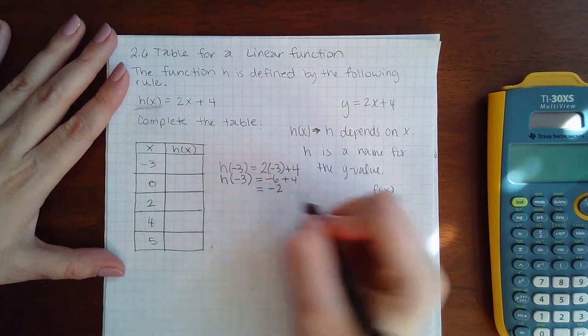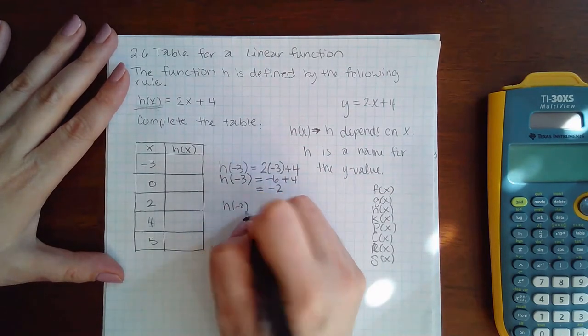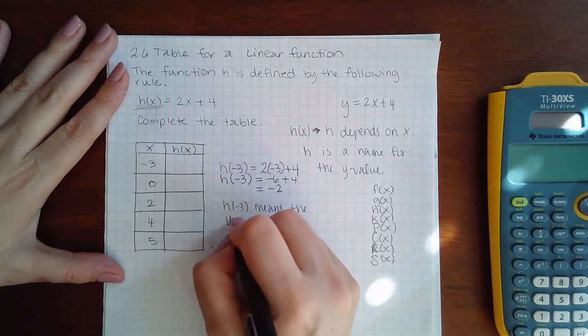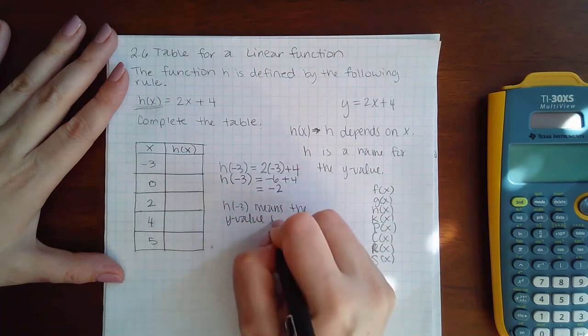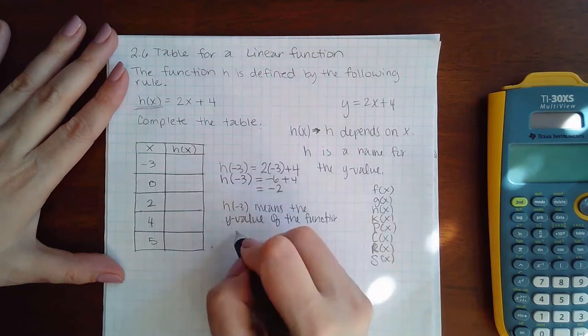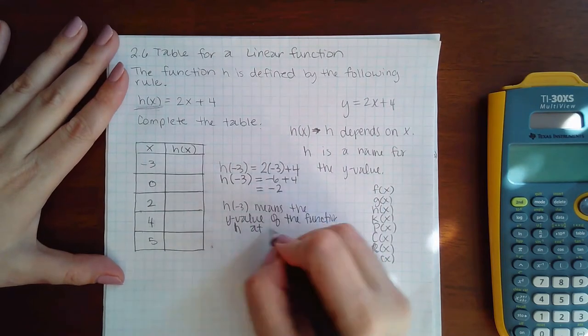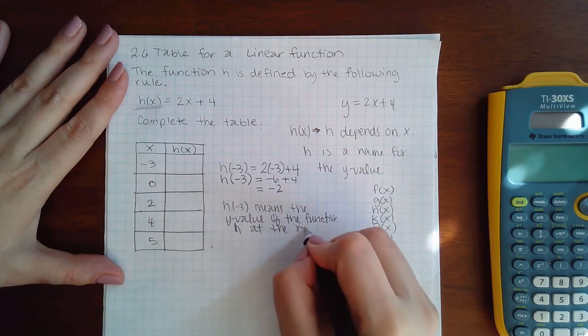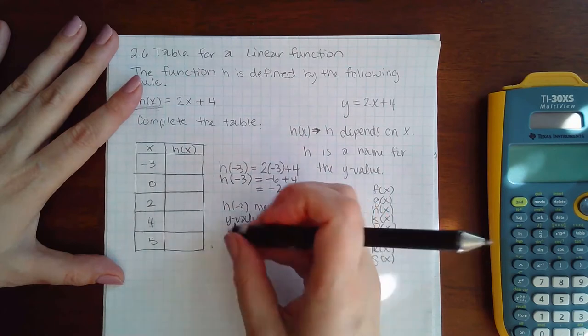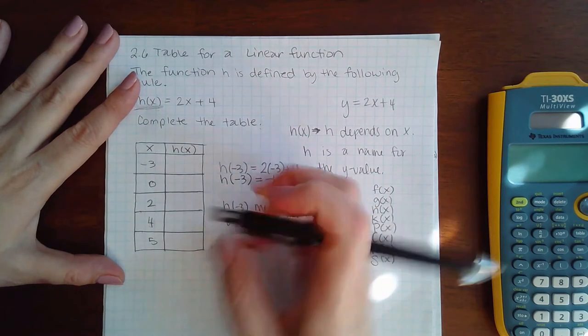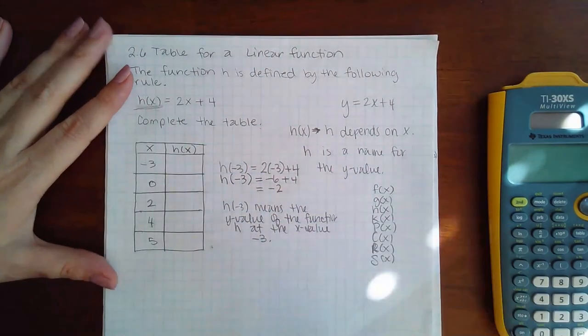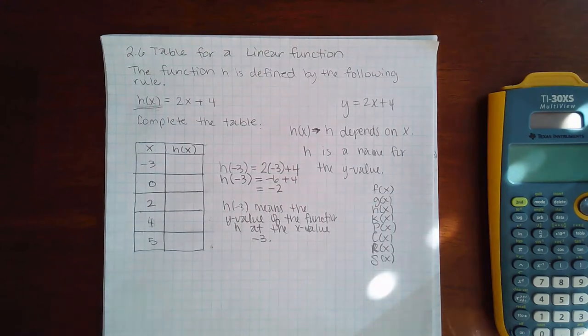So remember, h of negative 3 means the y value of the function h at the x value of negative 3. So don't think that that is an h times a negative 3 because it is not. It is called h of negative 3.